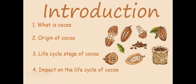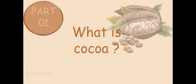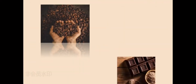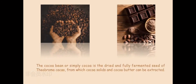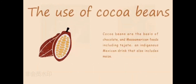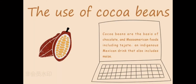Let's go to part 1. Let me tell you what is cocoa. The cocoa bean, or simply cocoa, is a dried and fermented seed of Theobroma cacao, from which cocoa solids and cocoa butter can be extracted. The cocoa bean is the basis of chocolate and Mesoamerican foods including tejate, an indigenous Mexican drink that also includes maize.